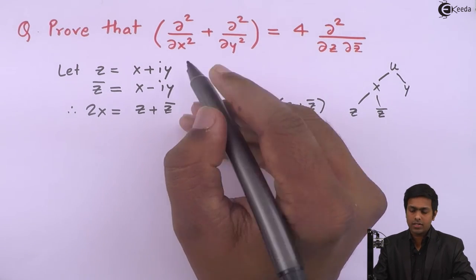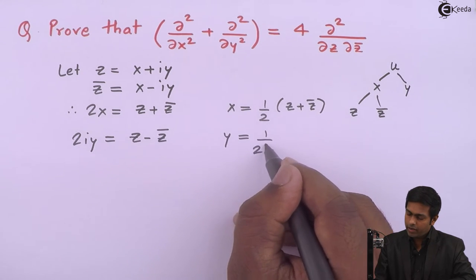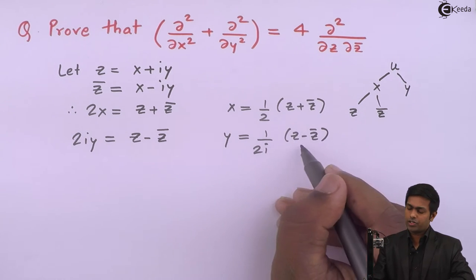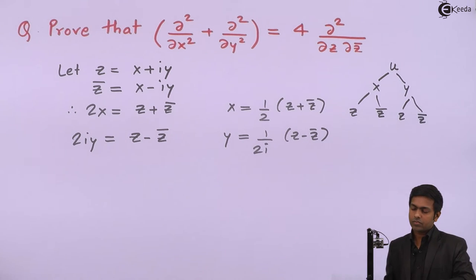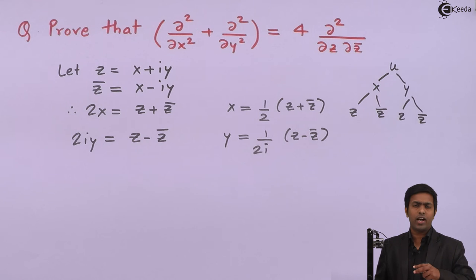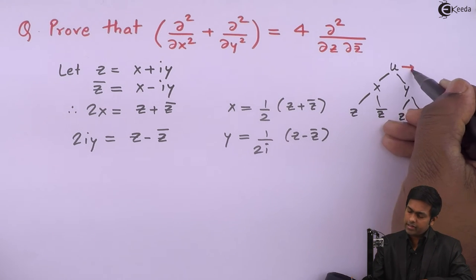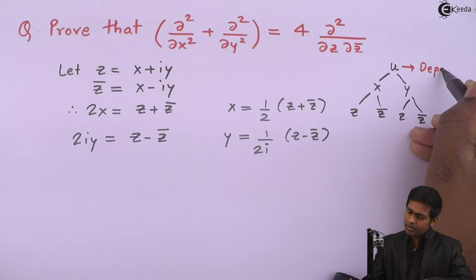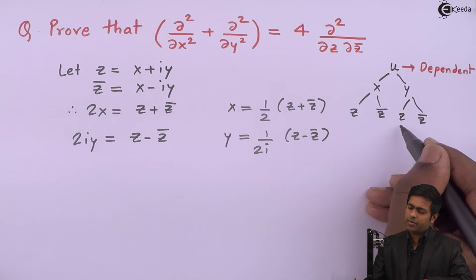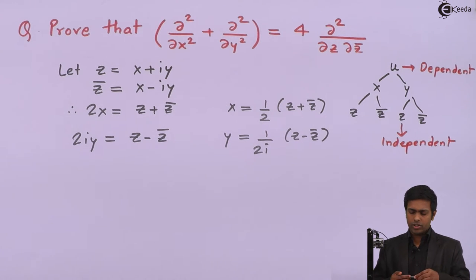Similarly, subtracting the two equations gives 2iy = z − z̄, so y = (z − z̄)/(2i), meaning y is also a function of z and z̄. Now we have u as a function of z and z̄ as well — a composite function where u depends on x and y, and x and y depend on z and z̄. Here u is the dependent variable, z and z̄ are the independent variables, and x and y are the intermediate variables.